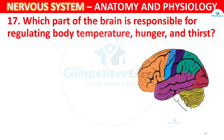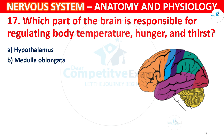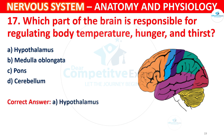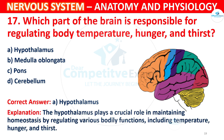Question 17: Which part of the brain is responsible for regulating body temperature, hunger, and thirst? Options: A) Hypothalamus, B) Medulla oblongata, C) Pons, D) Cerebellum. The correct answer is A, Hypothalamus. The hypothalamus plays a crucial role in maintaining homeostasis by regulating various bodily functions including temperature, hunger, and thirst.